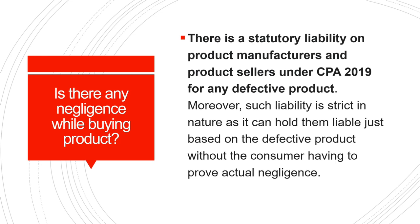Is there any negligence while buying a product? There is statutory liability on product manufacturers and product sellers under CPA 2019 for any defective product. Moreover, such liability is strict in nature — it can hold them liable just based on the defective product without the consumer having to prove actual negligence.